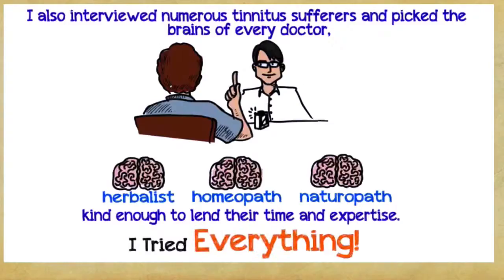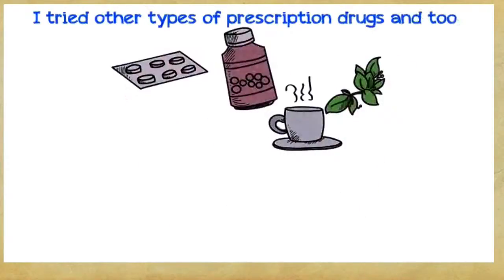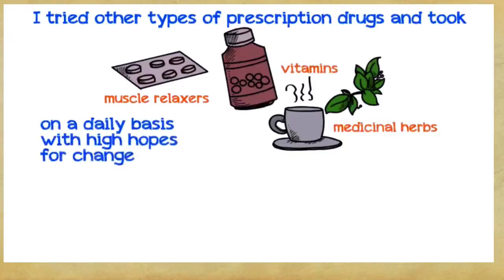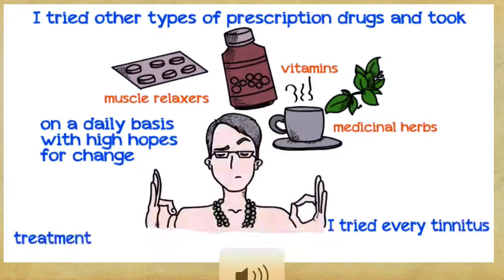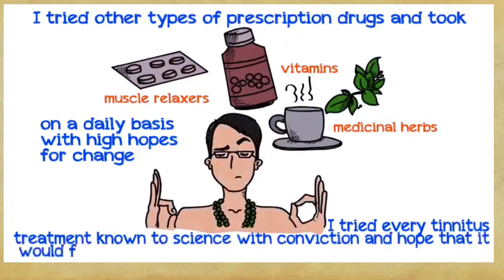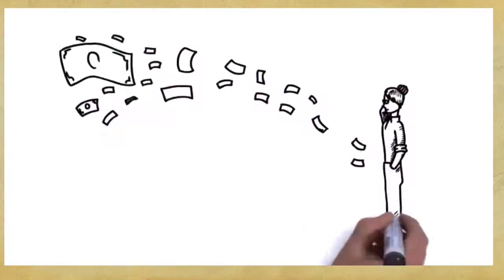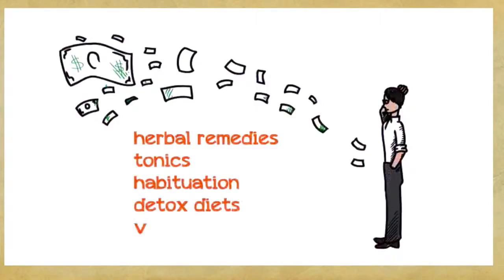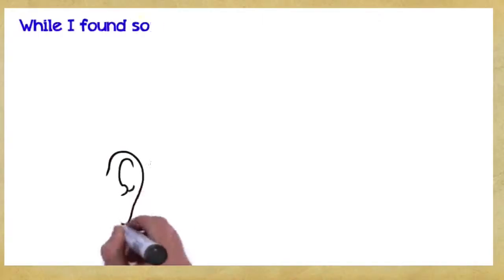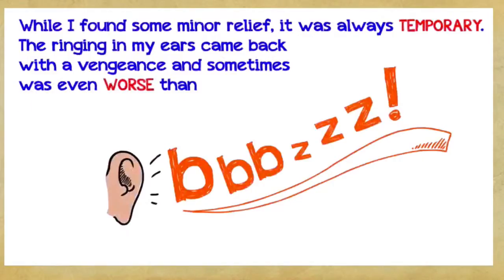I tried everything. Scientific facts, figures, and theories weren't enough. I tried other types of prescription drugs and took more muscle relaxers, vitamins, and medicinal herbs on a daily basis with high hopes for change. I bought numerous white noise CDs and did plenty of noise therapies, but to no avail. I tried every tinnitus treatment known to science with conviction and hope that it would finally eliminate my tinnitus and help me regain my life. Over the years, I spent a small fortune trying every type of product and treatment you could possibly think of—herbal remedies, tonics, habituation, detox diets, vitamin therapy, and so on. While I found some minor relief, it was always temporary. The ringing in my ears came back with a vengeance and sometimes was even worse than before treatment.